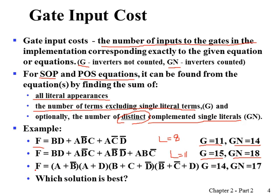For the last function expression, literal cost is 10. Adding the number of OR terms — we have 4 — gives gate input cost of 14. For gate input cost with NOTs, we add the distinct complemented single literals: not B, not D, not C. Not B appears again but we don't count it twice. So we add 3, giving gate input cost with NOTs as 17.